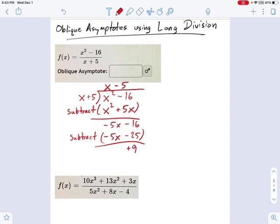So our remainder would be 9. I don't care about remainders. The oblique asymptote is simply y equals x minus 5. So let's move on and do...